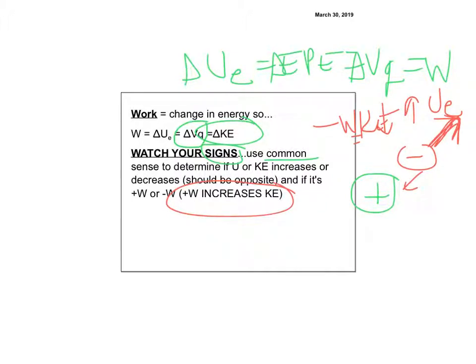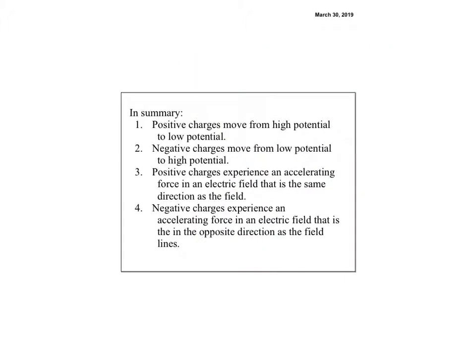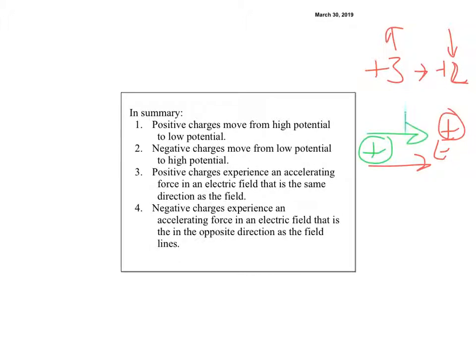My rule of thumb: if kinetic energy increases, I did positive work. Summary: positive charges always move from high potential to low potential; negative charges always move from low potential to high potential. A positive charge experiences an accelerating force in the direction of the E-field, gaining velocity (positive work). A negative charge moving opposite to the E-field direction decreases in velocity — negative work.